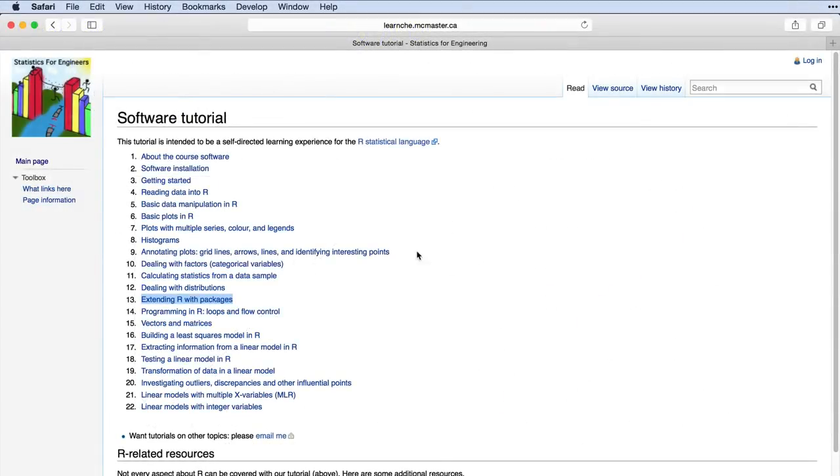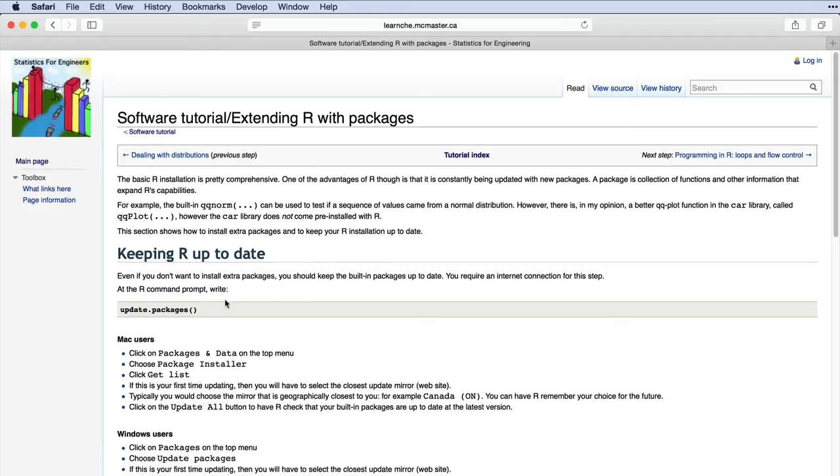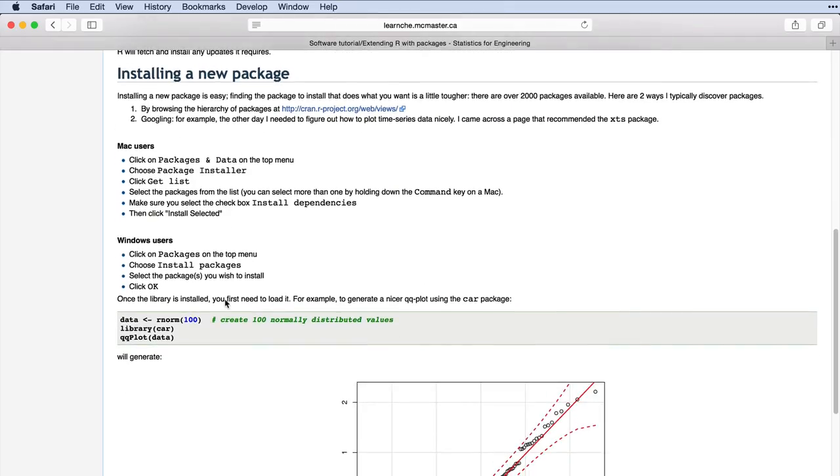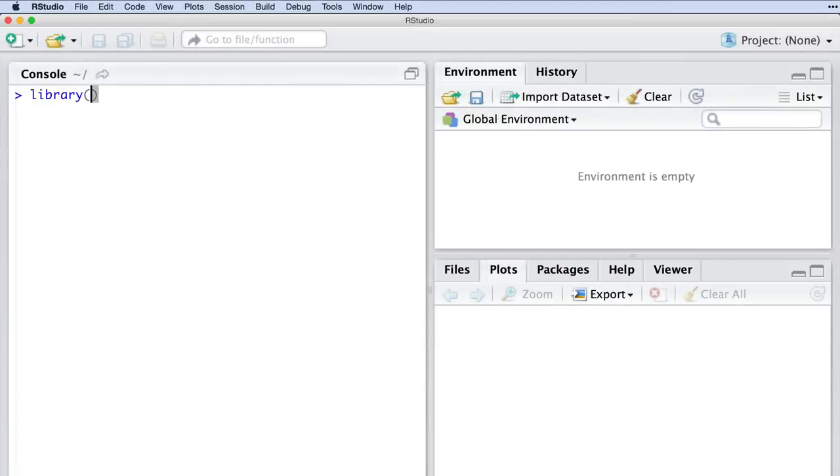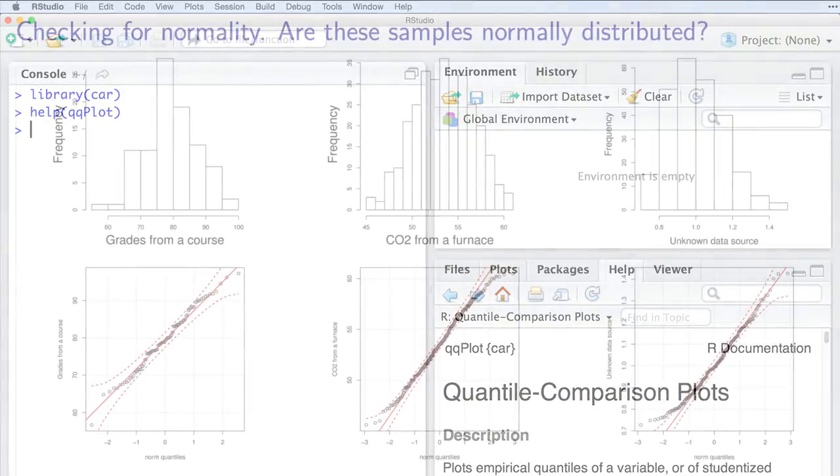I recommend using the car library in R to create these plots for you. Review the software tutorial on how to install a library and expand the capability of R. Once you have the car library loaded, you can use the qqplot function from that library. This function does all the work we've described in the video and superimposes those calculated bounds.